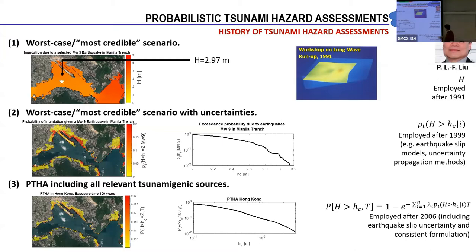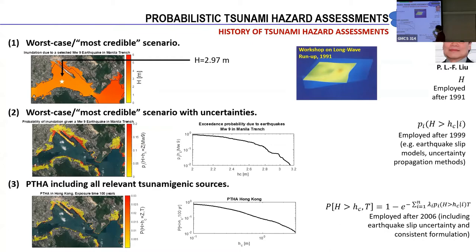Then around 2004, thanks to Eric Geist, who was the first person to develop the latest approach, we started to include the recurrence of earthquakes. Specifically, we began using the Gutenberg-Richter model to understand earthquake recurrence. By using the Gutenberg-Richter relation, we can associate a certain arrival random model to link the occurrence of an earthquake and finally the occurrence of a tsunami.